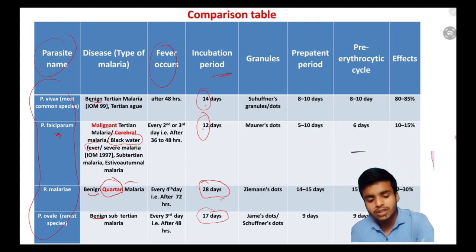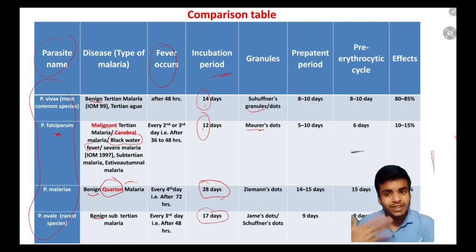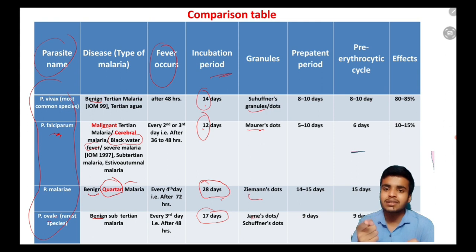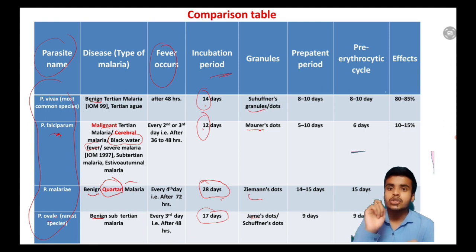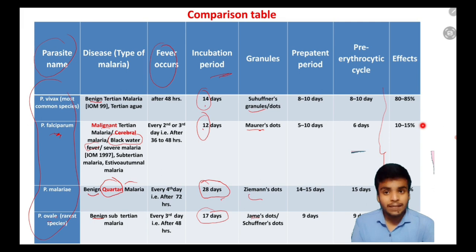Regarding granules: we will study Schüffner's dots for Plasmodium vivax, Maurer's dots for Plasmodium falciparum (malignant fever), James dots for Plasmodium ovale - remember 'jam ovale', and Plasmodium malariae has Ziemann's dots. So: P. vivax - Schüffner's dot, P. falciparum - Maurer's dot, P. malariae - Ziemann's dot, P. ovale - James dot. The last two are less frequently tested.